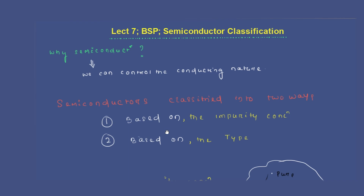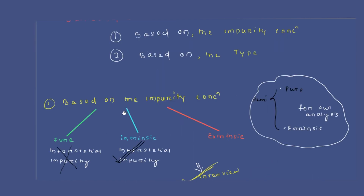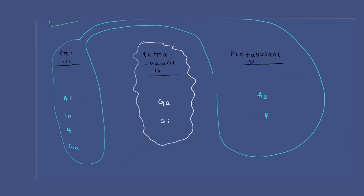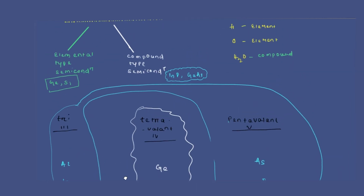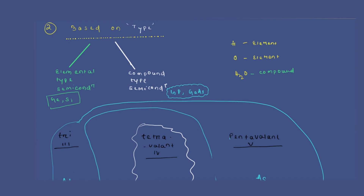Hello everyone. In this video lecture we are going to understand the classification of semiconductors. At some point semiconductor is classified into three categories, and at other times into two categories. What is this contradiction? We will figure it out in this lecture.